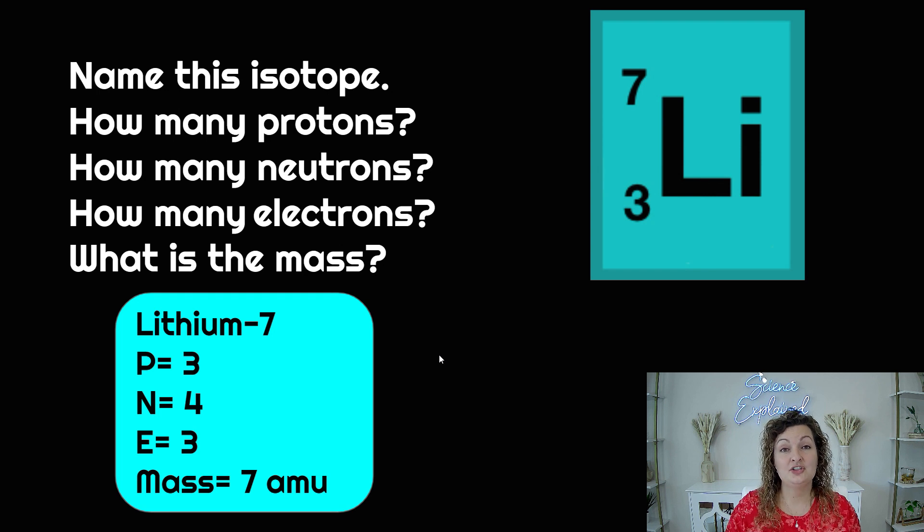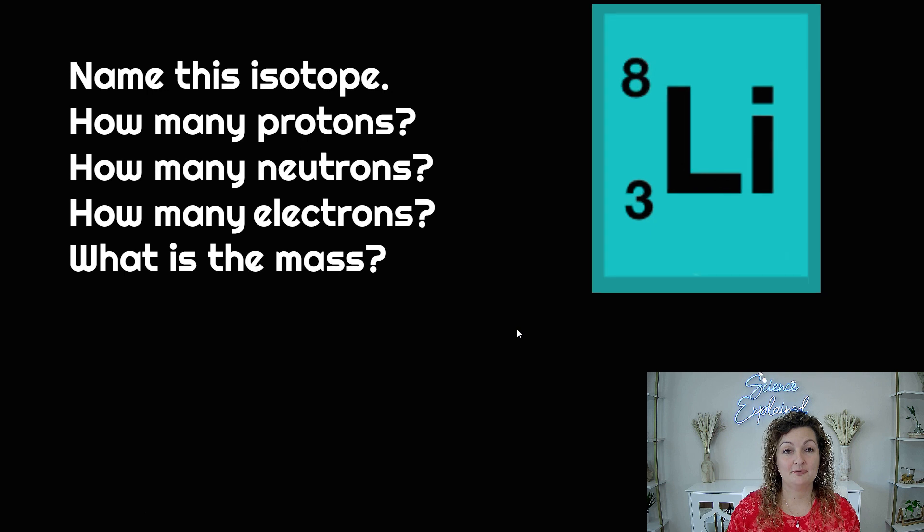Now the neutrons are changing because this is an isotope of it. So we do the mass, atomic mass, minus the number of protons. So seven minus three equals four. So four neutrons. And we can double check that. Neutrons plus protons should equal our mass. So three plus four equals seven. And then again, in a neutral atom, there's no charge here. So in a neutral atom, protons and electrons are the same, so three. And then we have seven amu as our mass number.